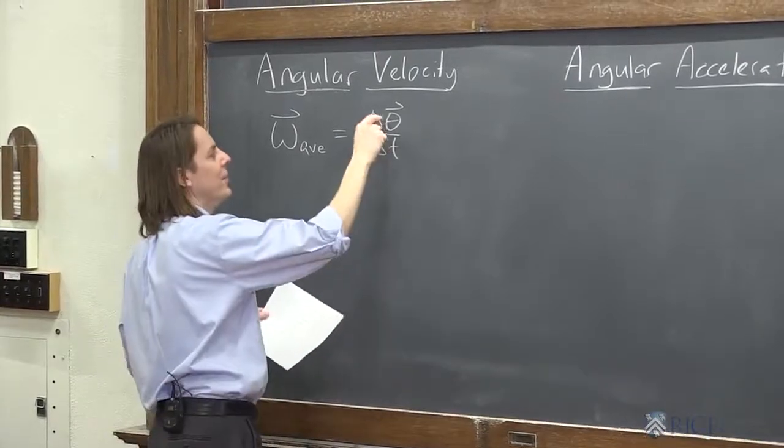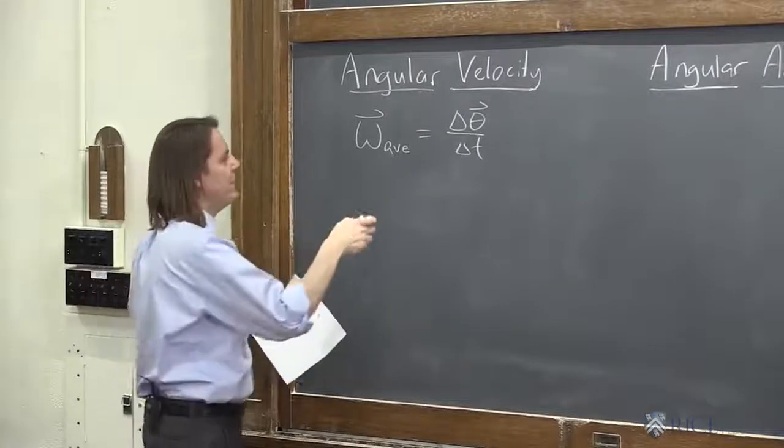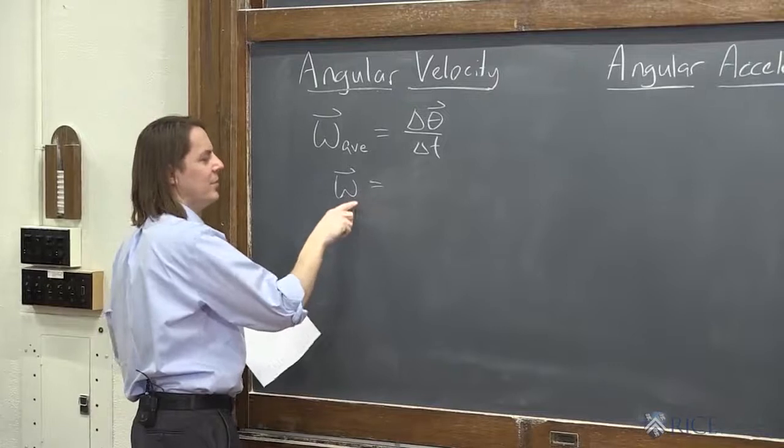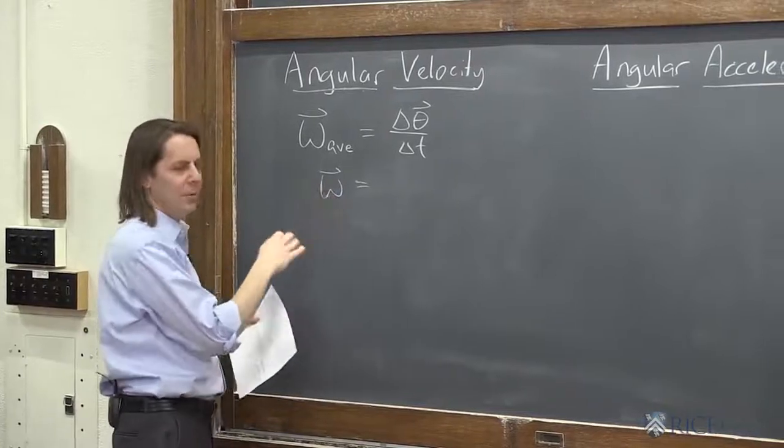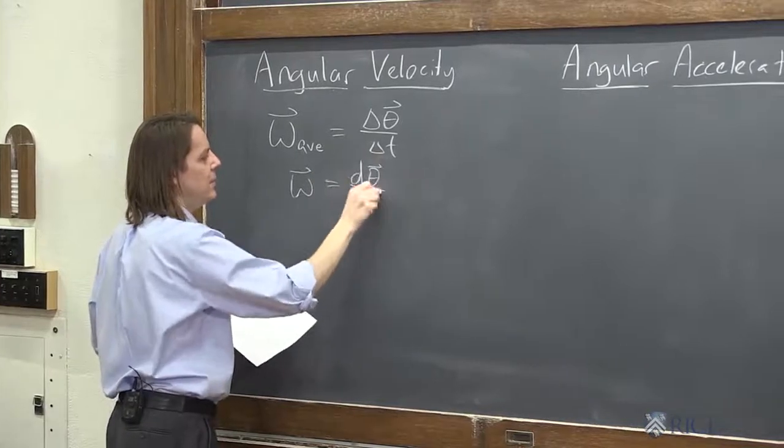See, remember, that's the final minus the initial theta, the direction is along the axis of rotation over delta t. Or if you want the instantaneous omega, remember, we don't put the instantaneous symbol on there. If we see it without a symbol, that means it's instantaneous, was the derivative d theta dt.